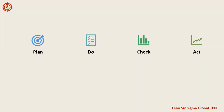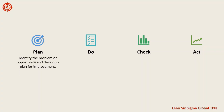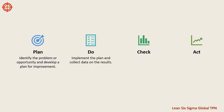So the first phase of this cycle is Plan. Plan is to identify the problem or opportunity and develop a plan for improvement. Do is to implement the plan and collect data on the results.